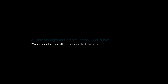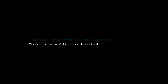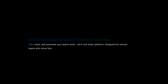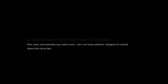A bad description might look something like this: 'Welcome to our homepage. Click to learn more about what we do.' It's vague, tells the user nothing specific, and doesn't give them any reason to engage. A better version looks more like this: 'Plan, track, and automate your team's work, all in one smart platform, designed for remote teams who move fast.' It's clear, action-oriented, and actually tells the user what they'll find on the page.